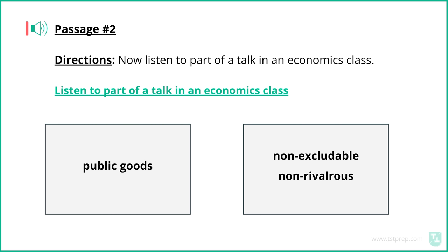Professor, is there any way to kind of judge whether a product is a public or private good? I mean, those TV channels, they might be free, but you still need to buy a TV. So I'm just not sure how you can tell if something is a public good. Yes, this idea can be a bit confusing. I guess it's best to contrast it with a private good, say, a piece of pizza. A piece of pizza can be bought and sold pretty easily, and one of the reasons why is because it's so easy to separate. One of the most defining characteristics of public goods is that they are almost impossible to separate.